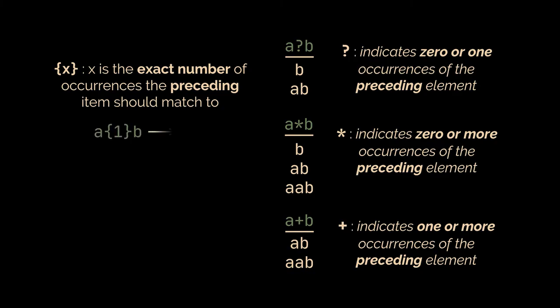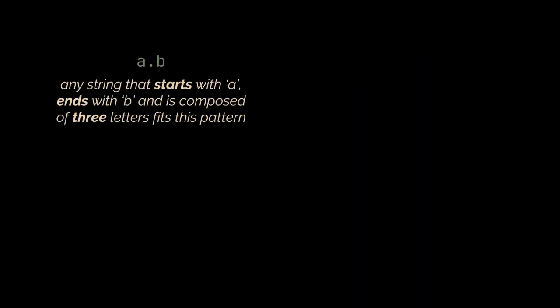So A one inside curly brackets after the A means that only the string AB is matched using this pattern. You can also use the brackets to specify boundaries like a minimum and a maximum. So if inside these same brackets you place zero comma two, then B, AB, and AAB will be matched. Now if you place a dot in your pattern between the A and the B, then any string that starts with A, ends with B, and is composed of three letters only fits this pattern, as the dot matches any character. It's a wildcard.